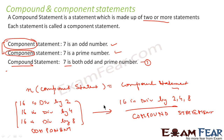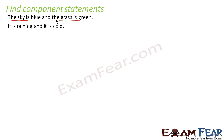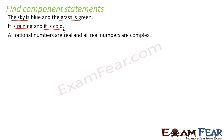Let's take some examples where we have to find the component statements from given compound statements. First: 'The sky is blue and the grass is green.' There are two component statements — first is 'the sky is blue,' second is 'the grass is green.' Next: 'It is raining and it is cold.' Here also we have two component statements: 'it is raining' and 'it is cold.'